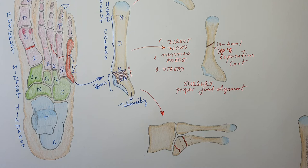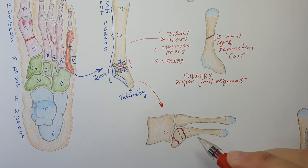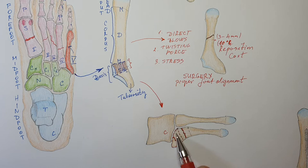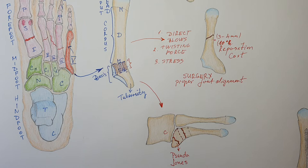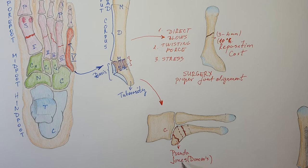If we analyze this bone, we can see the articulation with the cuboid and with the fourth and fifth metatarsal. A fracture in this part of the bone — at the articulation with the cuboid — is called the pseudo-Jones fracture, also known as the dancer's fracture, obviously because of the possibility of getting this fracture while dancing. As the name says, it is not a real Jones fracture.